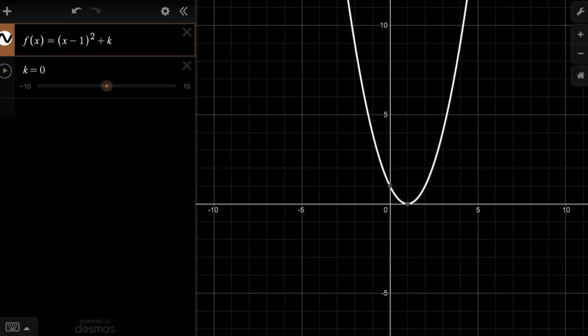Well, that's interesting. Before our vertex was at zero, zero, now our vertex is at one, zero. So by replacing our x with an x minus one, we actually shifted one to the right.